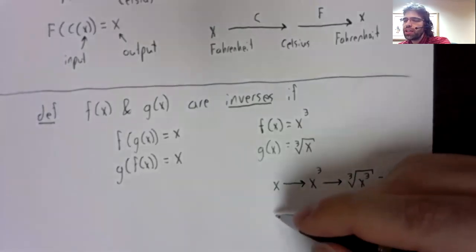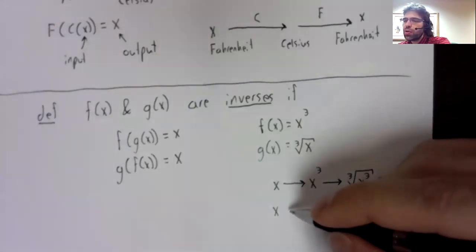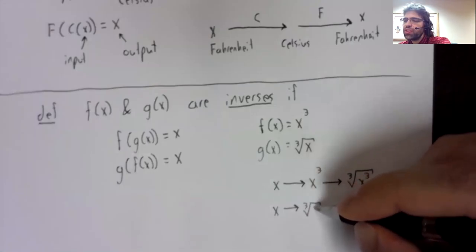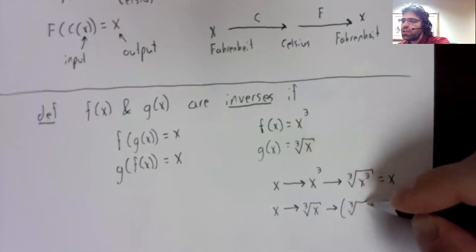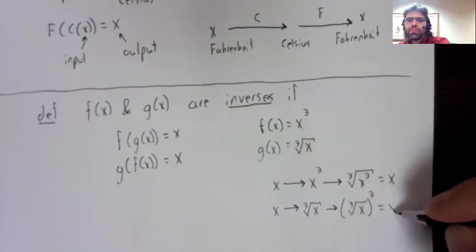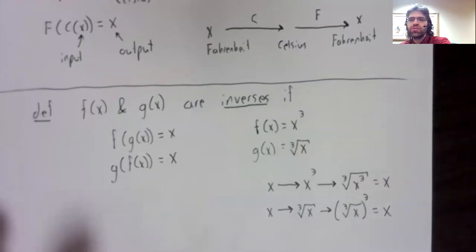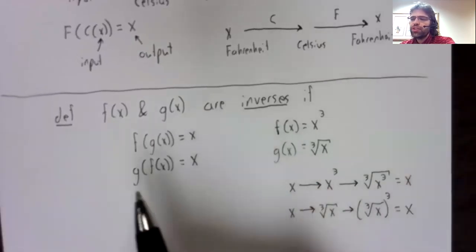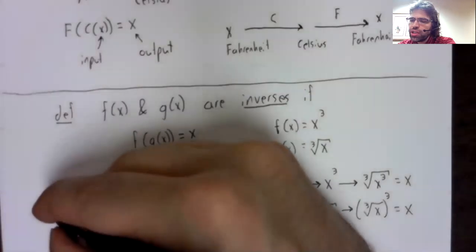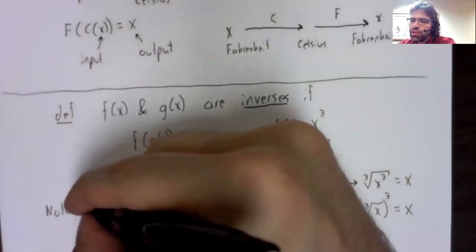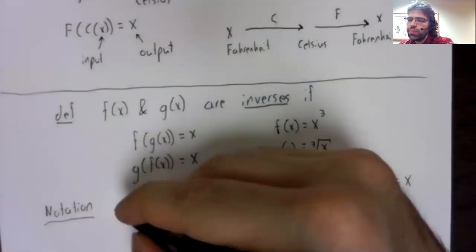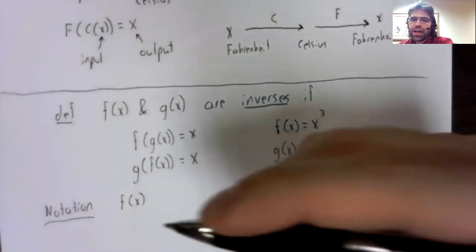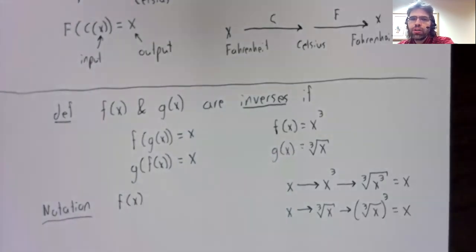Cubing and taking the cubed root undo each other. If you start with an input x and take the cubed root, you wind up back where you started. Or if you start with an input x and take its cubed root, and then you cube it, you wind up back where you started.